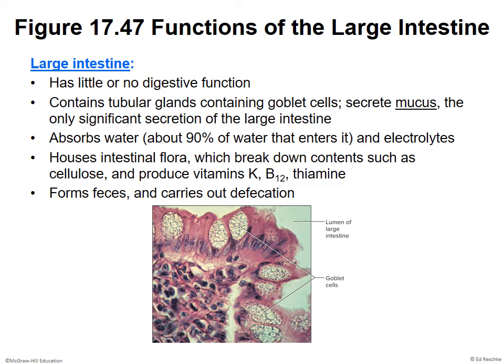Mucus is really the only significant secretion here, as the small intestine does all the digestive work. The large intestine absorbs about 90% of the water that enters it — which is why diarrhea is watery, because contents move through too quickly. It also absorbs electrolytes. Intestinal flora are vitally important, producing vitamins K, B12, and thiamine. Whenever you hear vitamin B12, remember intrinsic factor.